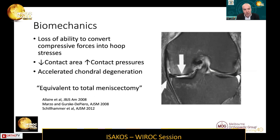Over time, we've come to understand that root tears cause the loss of the ability to convert compressive forces into hoop stresses. There's a reduction in the contact area and therefore an increase in the contact pressure, and this leads to accelerated condylar degeneration. This has been described as being the equivalent to a total meniscectomy.